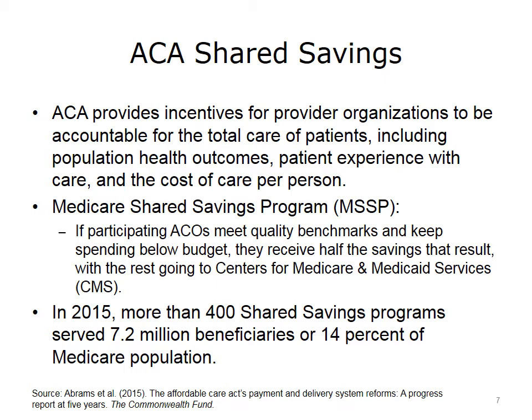In particular, the Medicare Shared Savings Program, referred to as MSSP, requires participating ACOs to meet quality benchmarks and keep spending below a particular budget or target. If they do that, the MSSP ACOs receive half of the savings that would result, with the rest going to the Centers for Medicare and Medicaid Services, or CMS. In 2015, there were more than 400 MSSP Shared Savings Programs serving 7.2 million beneficiaries across the U.S., or 14% of the Medicare population.